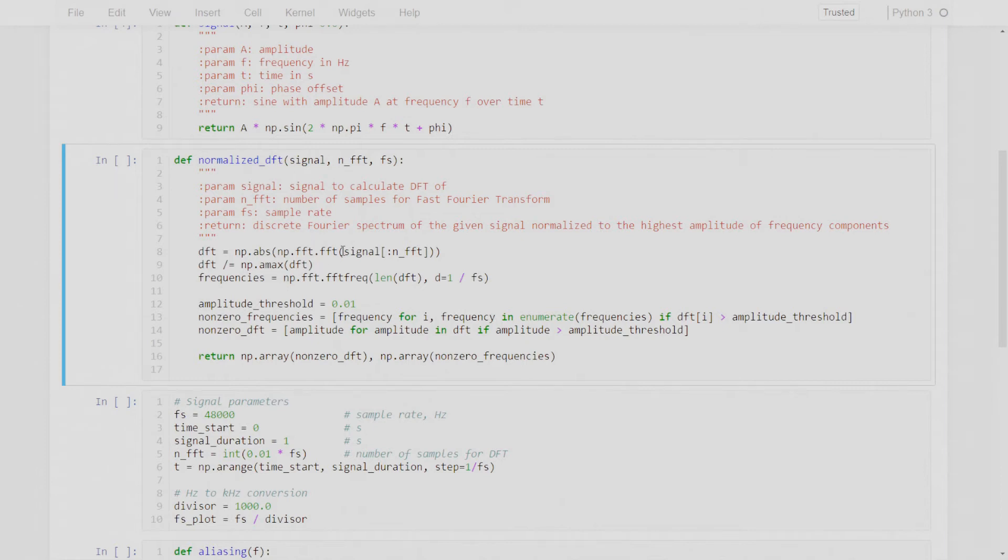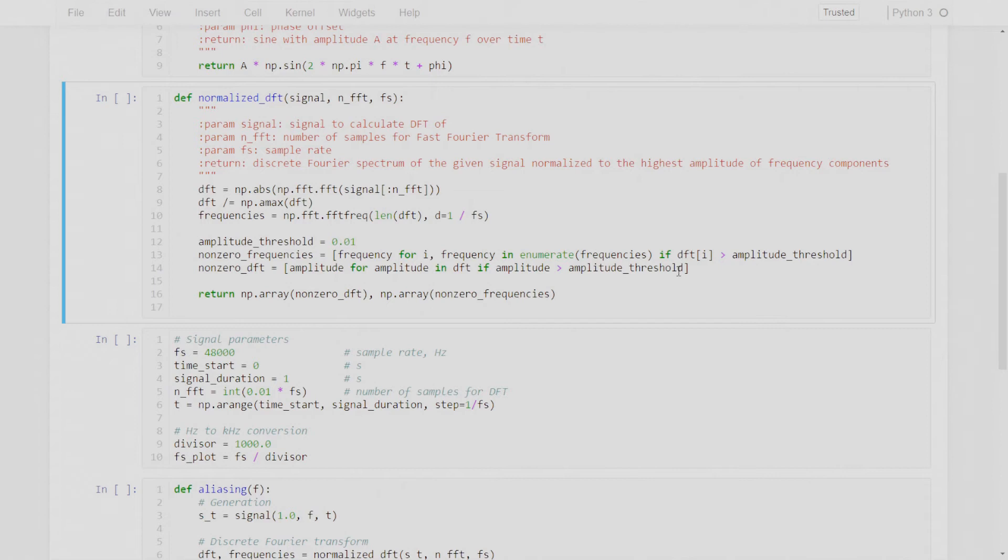Then I used something what is called a normalized DFT. It calculates the discrete Fourier transform of the signal via fast Fourier transform, and then I'm normalizing the discrete spectrum using the maximum amplitude of the frequency components. You can see here the absolute value means that it's an amplitude frequency spectrum, and here I find the biggest amplitude of a frequency component and divide each amplitude through this amplitude. Okay, and then I'm getting only the points for which DFT is non-zero.